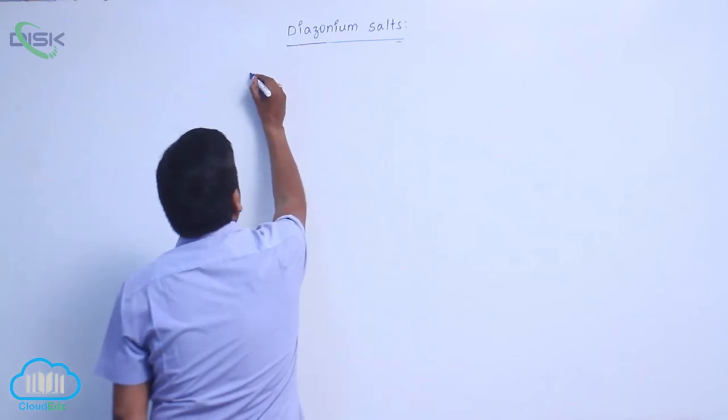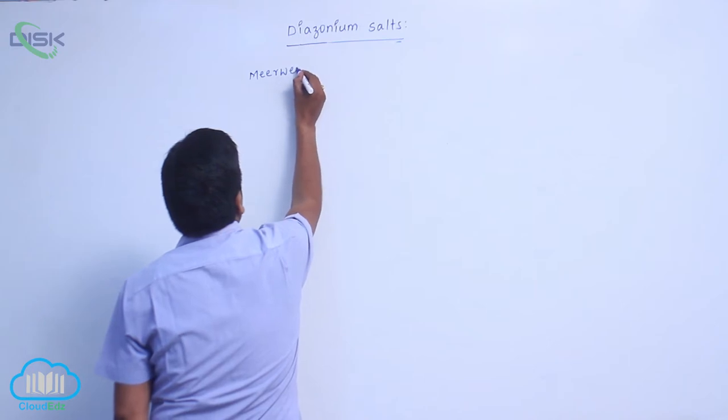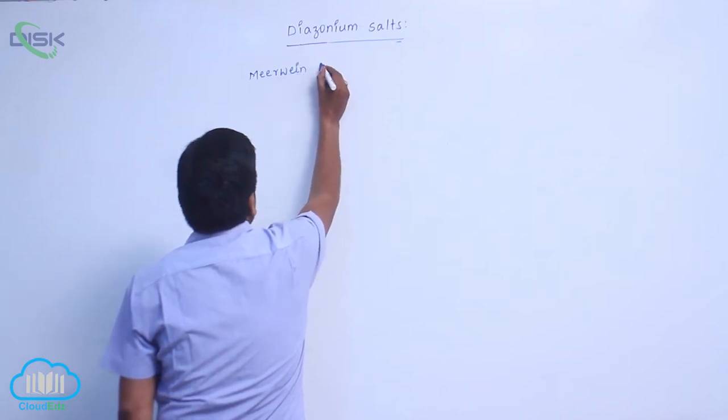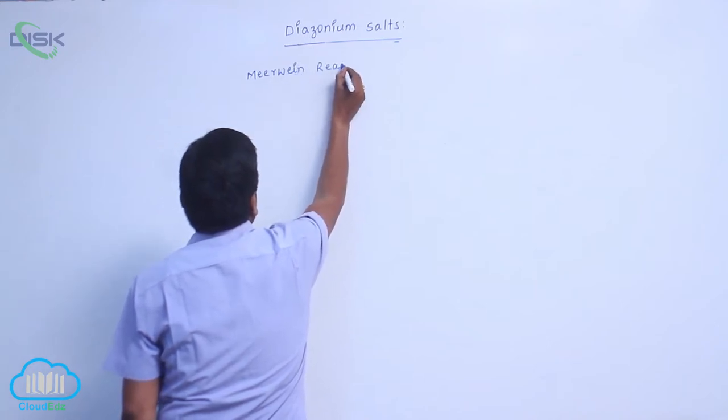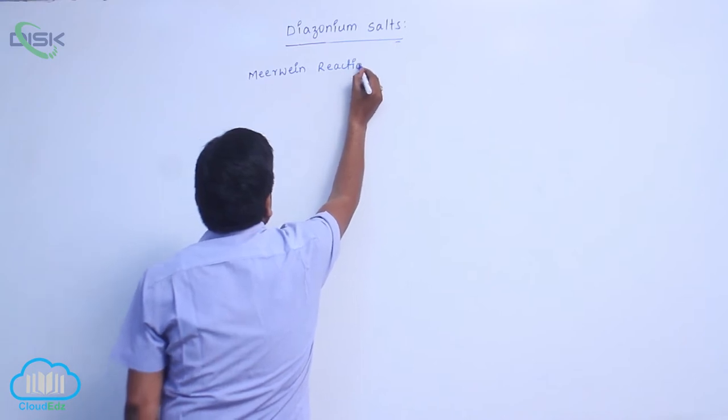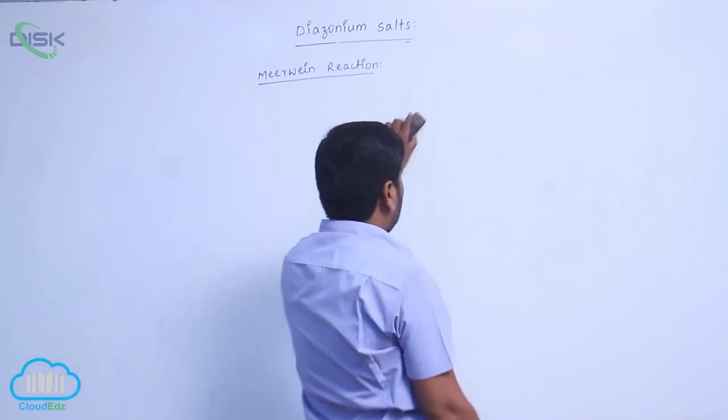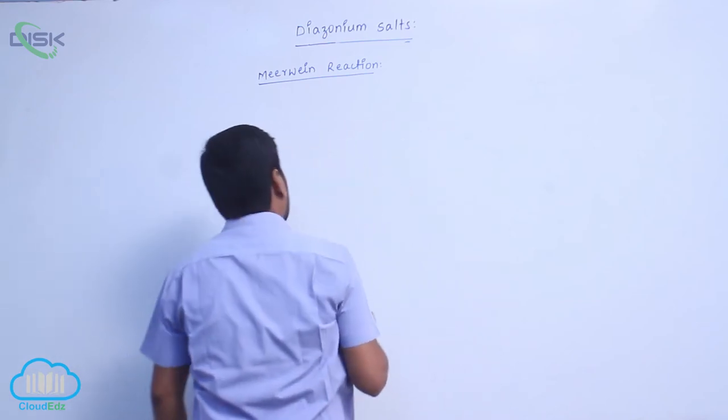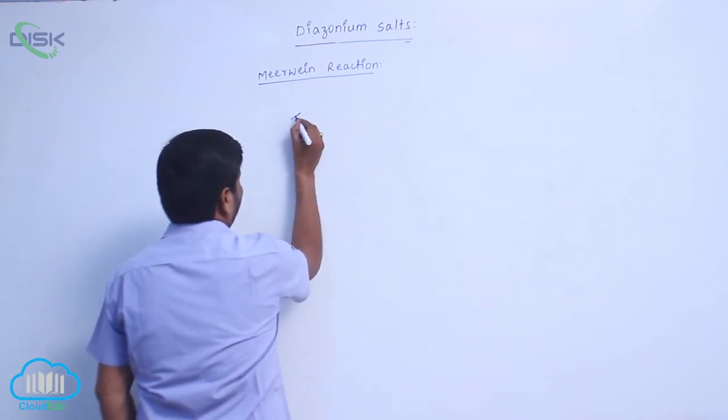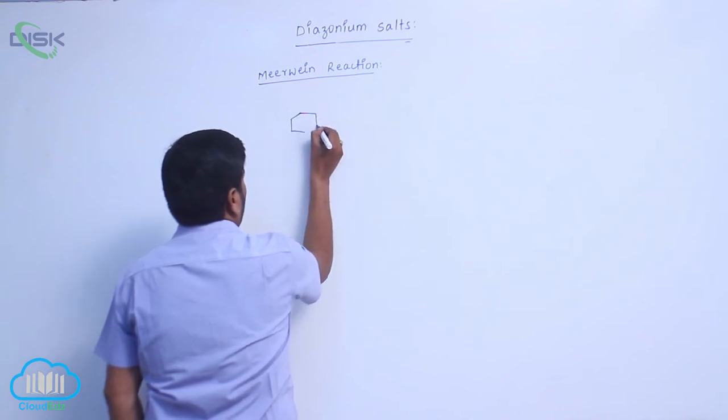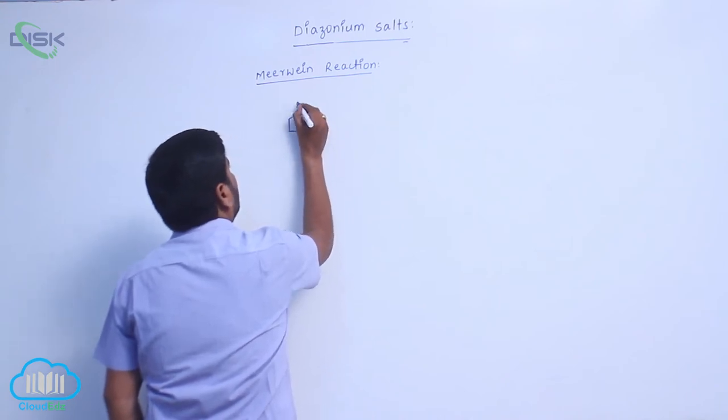Next one is Mervine reaction. Carbonyl, Benzene Diazonium Chloride.